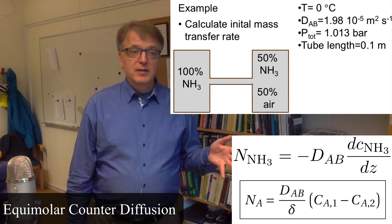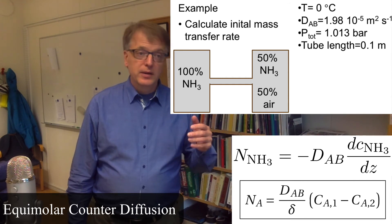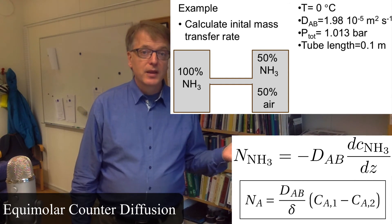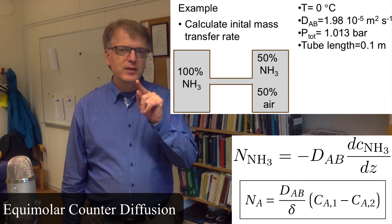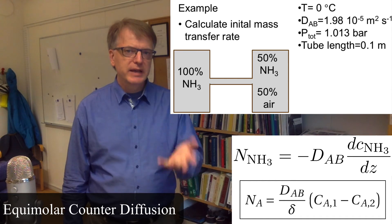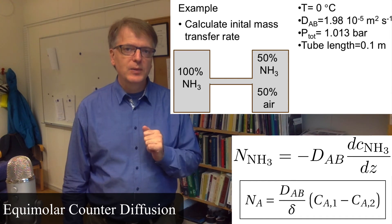It has the diffusivity times the concentration gradient of the ammonia. As before, that can be integrated. We have the thing with concentration and we have gases. How do we deal with that?